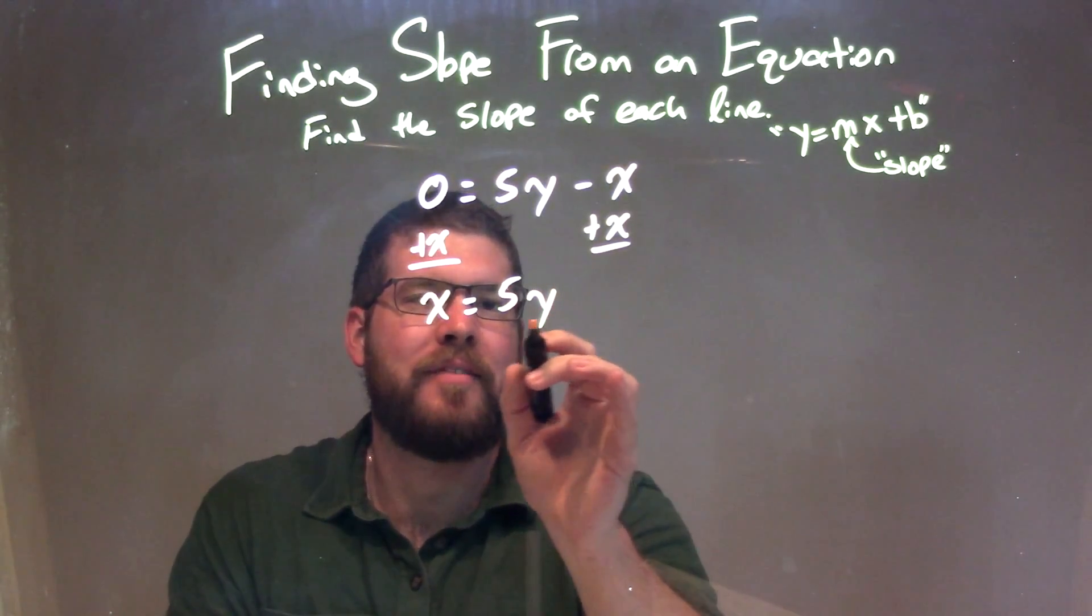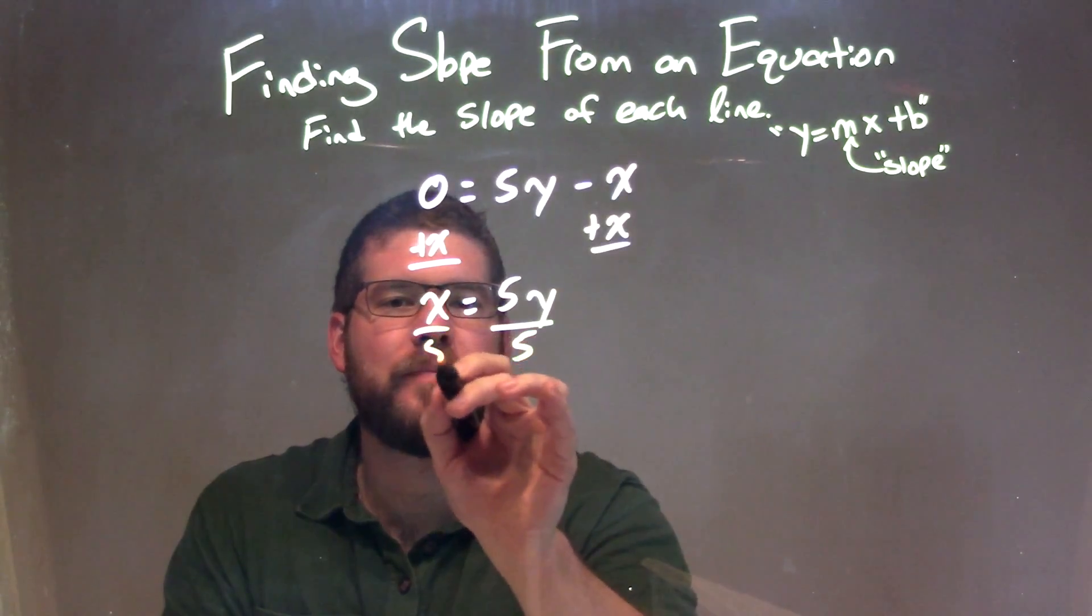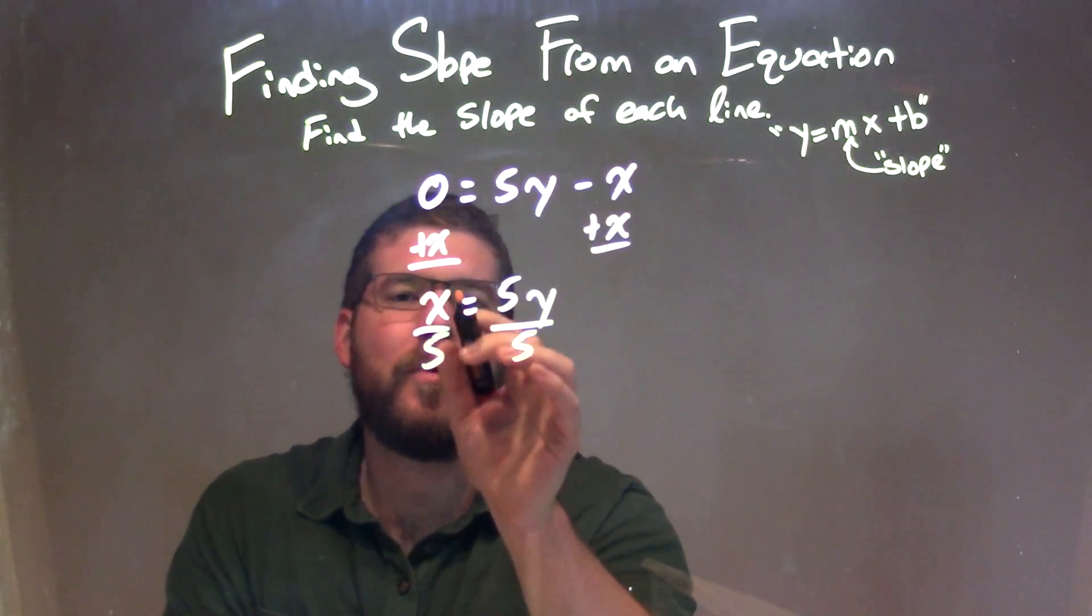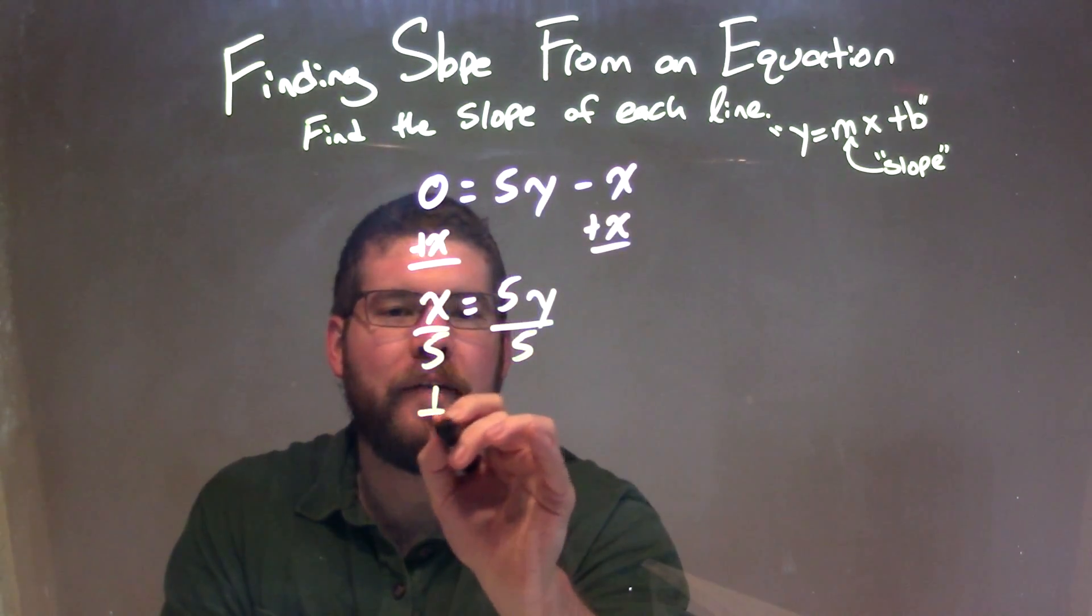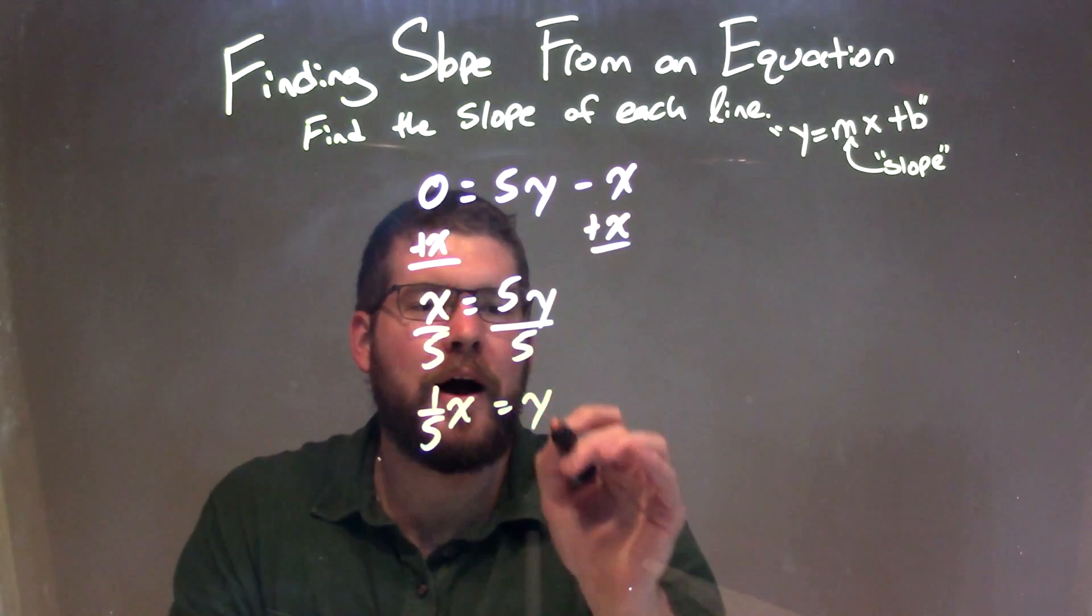To get y by itself, I'm going to divide both sides by 5, and that leaves me with x divided by 5, which is 1/5 x. That's equal to y.